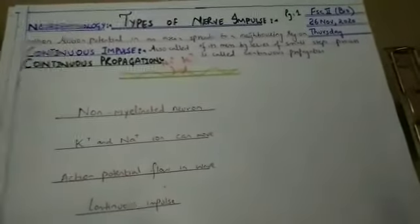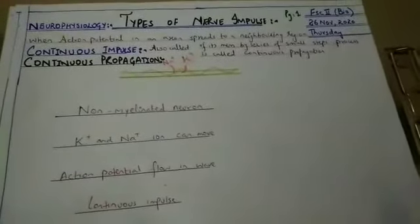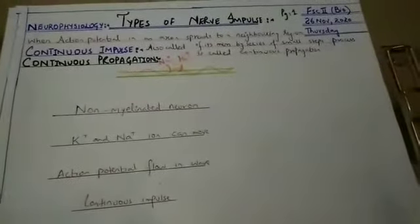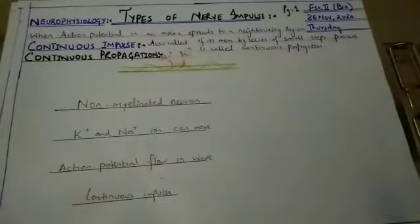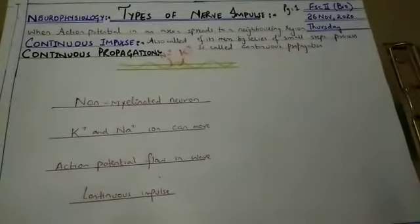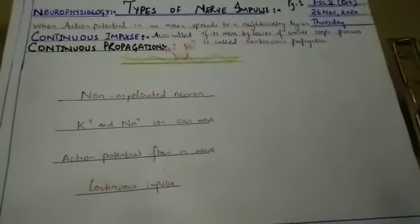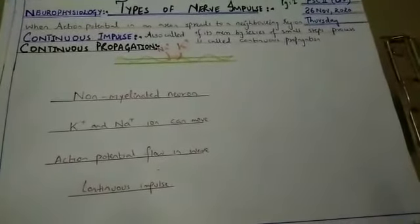Usually, in short notes, you can ask a question what is the difference between continuous propagation or continuous impulse or what is the saltatory impulse or saltatory propagation. And these types of impulses are found in which type of neuron? Either it is present in myelinated neuron or either it is present in non-myelinated neuron.